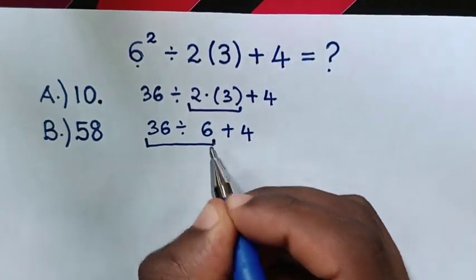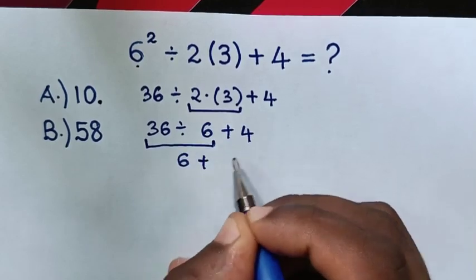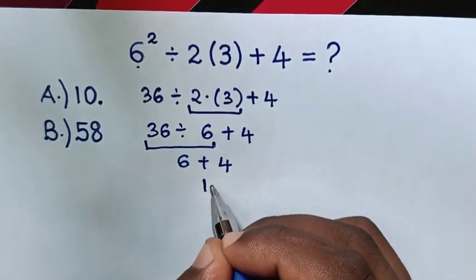Then, the next step is division. So, this divided by this is 6, then plus 4. So, this plus this is 10.